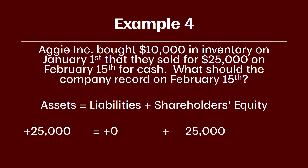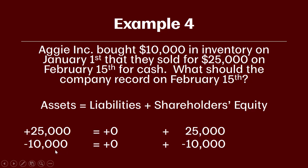That takes care of one part of this transaction — the receipt of cash increasing assets, and the revenue earned by providing the good increasing shareholders' equity. Now we have another transaction to record. Since we sold the inventory, we no longer have it in our possession, so we need to decrease inventory by $10,000 — the cost of the inventory. We decrease inventory by what we paid for it, not by the sales price. We also need to decrease shareholders' equity, because when we sell inventory we move it from an asset to an expense — cost of goods sold — at the time the inventory is sold.